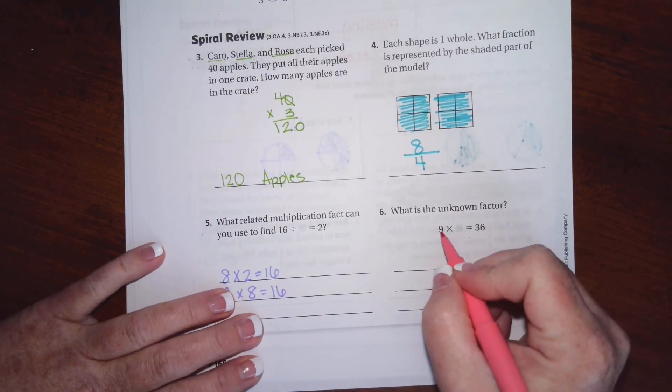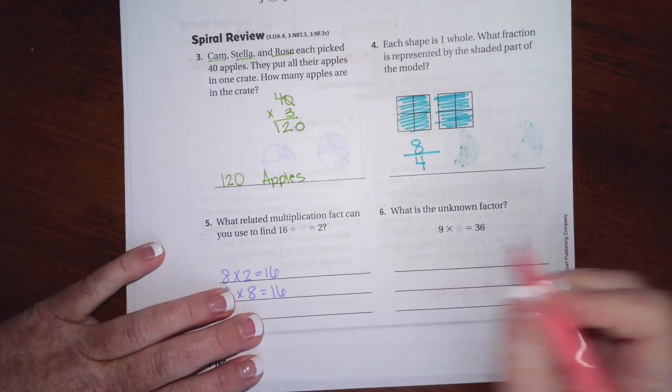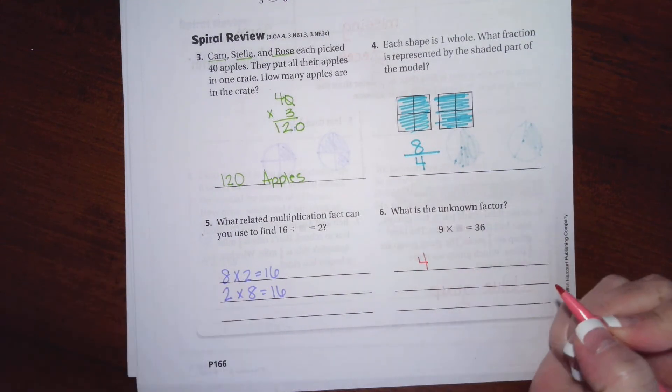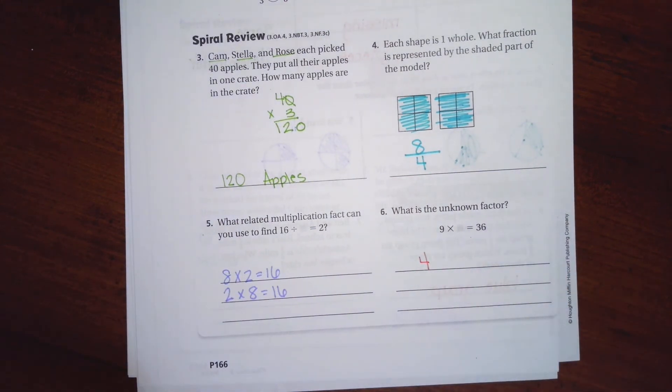What is the unknown factor? 9 times what is 36? 9 times 4 is 36. All right guys, that's it. Thanks for hanging out for 9.4, come on back for 9.5. See you soon.